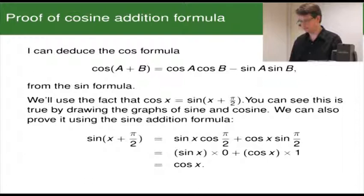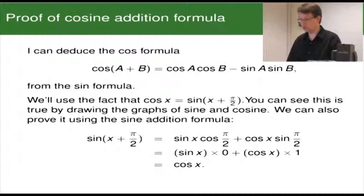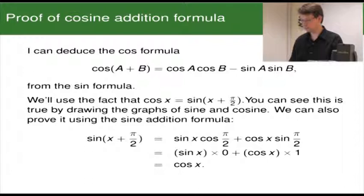We'll use the fact that cosine X equals sine(X + π/2). You could see this is true by drawing graphs of sine and cosine, but we're going to use the sine addition formula to show it. Sine(X + π/2) equals sinX cos(π/2) plus cosX sin(π/2). That's just the sine addition formula. Cosine(π/2) is 0 and sine(π/2) is 1, so we end up with sinX times 0 plus cosX times 1, which is just cosine X. So we've proved that cosine X equals sine(X + π/2).